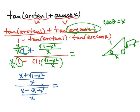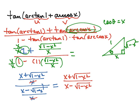Dividing those two terms — we have fractions, so we multiply by the reciprocal — our x terms cancel out, and our final answer is x plus the square root of 1 minus x squared, divided by x minus the square root of 1 minus x squared.